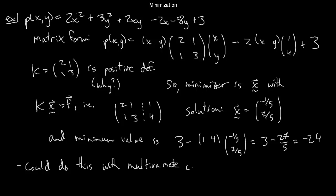The smallest that polynomial could possibly be is -2.4. There's a unique global minimum, and we found where we can minimize it. You could do this with multivariate calculus. You've been asked to before in your multivariate calculus class. But what you needed to do was to analyze the Hessian matrix. And what did you need the Hessian matrix to be? You needed the Hessian matrix to be positive definite. Really, the calculus methods are actually the algebra methods.